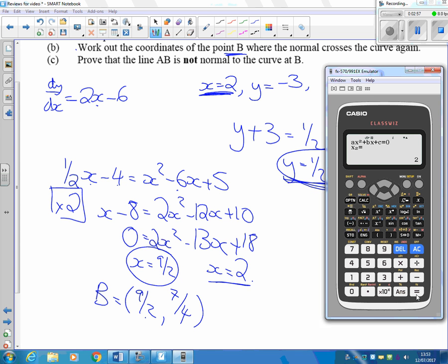For the very last bit, it says prove that the line AB is not normal to the curve at B. Well, to do that, what I'm going to do is I'm going to put this 9 over 2 in our gradient formula here then. So at B, dy by dx here, throwing in the 9 over 2 in here, that's 9, 9 take away 6, 9 take away 6 is 3.